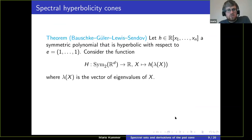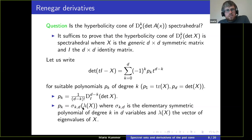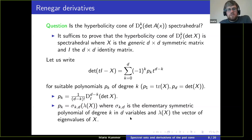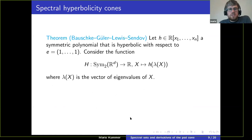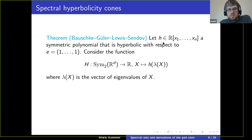This operation — having a symmetric polynomial and plugging in the eigenvalues of a matrix — gives us another operation that preserves hyperbolicity. More precisely, we take a symmetric polynomial h, symmetric with respect to permuting variables x1 to xn, and assume it's hyperbolic with respect to the all-ones vector.